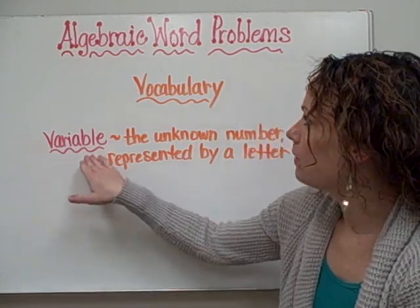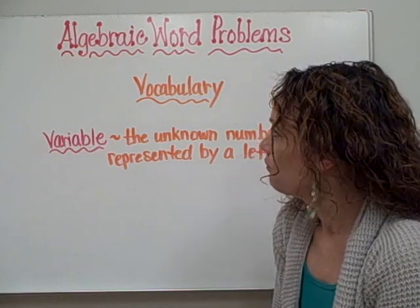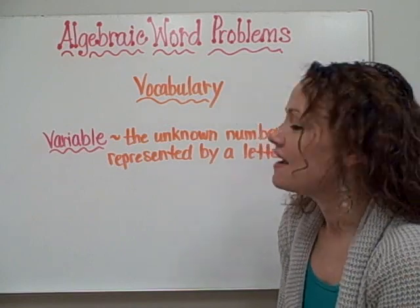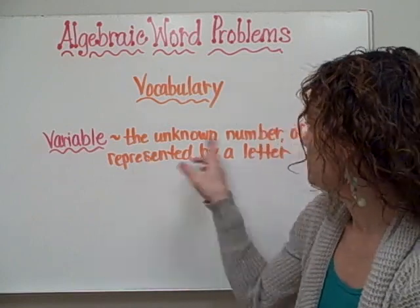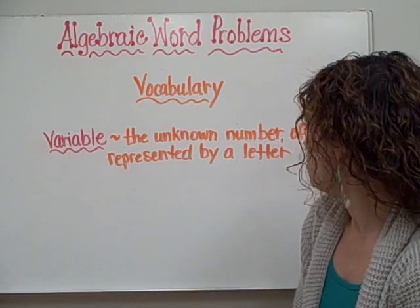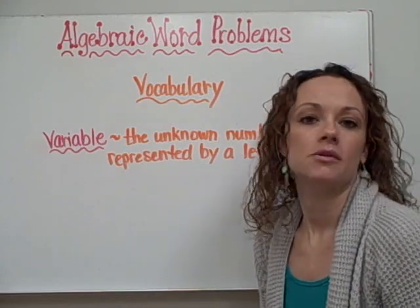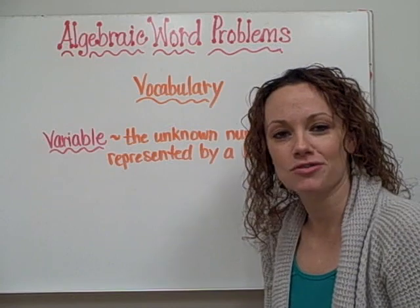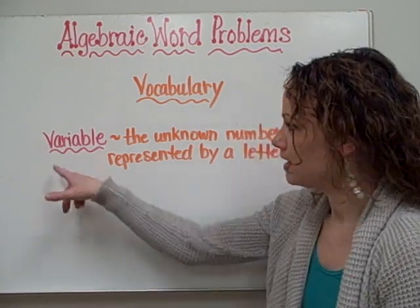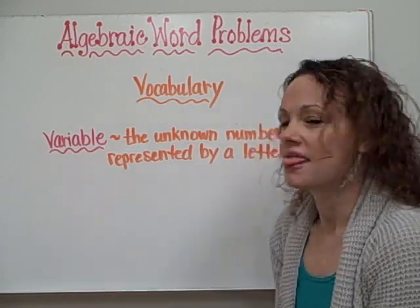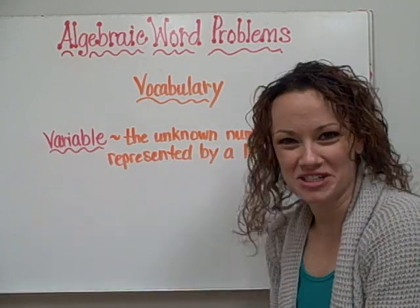We have a new word that I'd like you to write in section 2 of your homework sheet. The new vocabulary word is variable. The word variable just means the unknown number that is often represented by a letter. So anytime you have the letter N, X, or T in place of an unknown number, we call that the variable. Please copy this into your homework sheet.